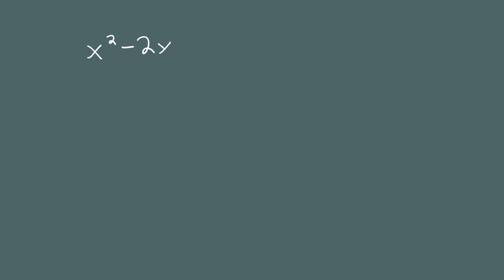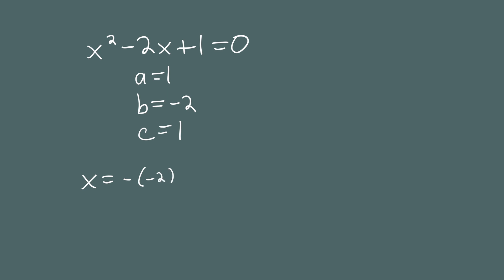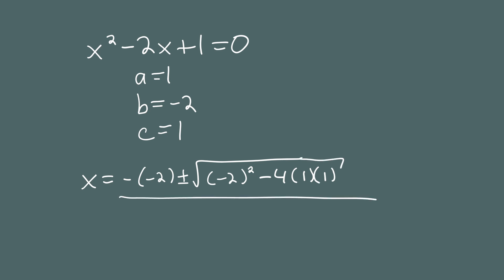For the second example, let's look at the equation x squared minus 2x plus 1 equals 0. We solve this again using the quadratic formula. a is the coefficient of x squared, so a is 1. b is the coefficient of x, so that is negative 2. And c is the constant term, which is plus 1. Putting these three numbers into the quadratic formula gives us x equal to the opposite of negative 2, plus or minus the square root of b squared minus 4ac, all over 2 times a, or 2 times 1.